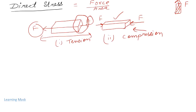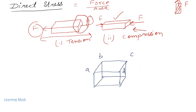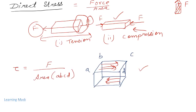The third case is shear. If a force acts parallel to the cross-sectional area, it develops a stress known as shear stress. The force acting parallel to the surface is called shear force. Shear stress (τ) is defined as shear force per unit area: τ = F / A, where A is the cross-sectional area where the shear force is acting.